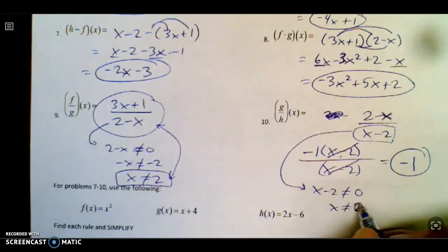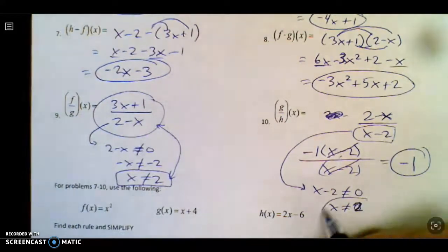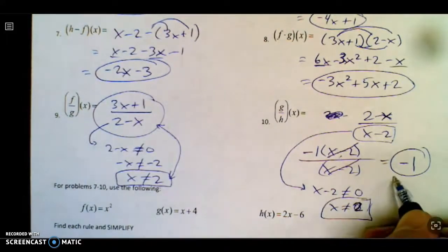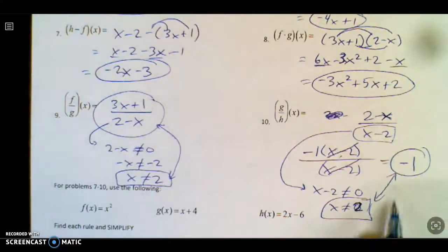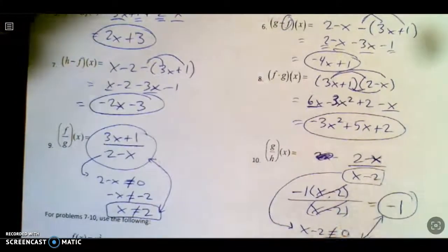x not equal to 2. So even though the end answer didn't look like it had any restrictions or denominator, it does have a restriction. Because you always look back to the original division problem.